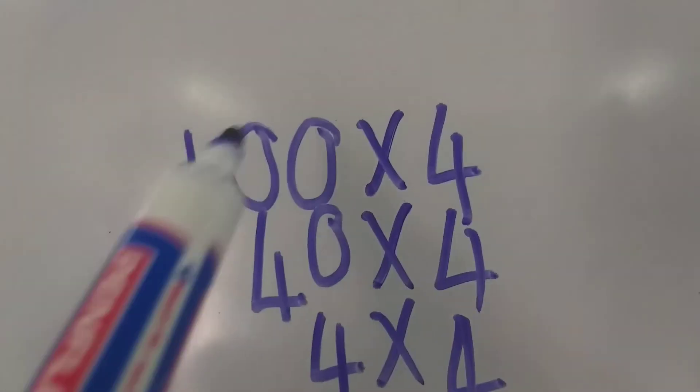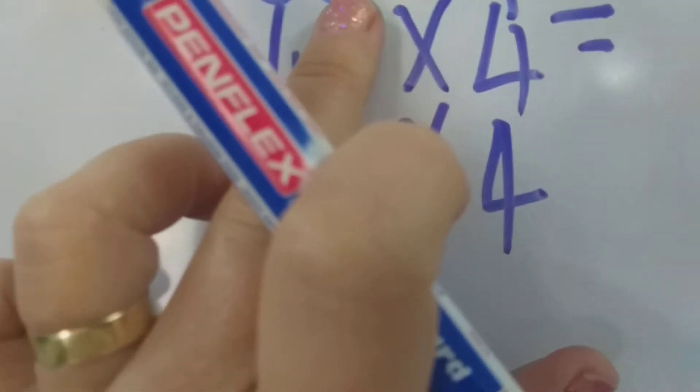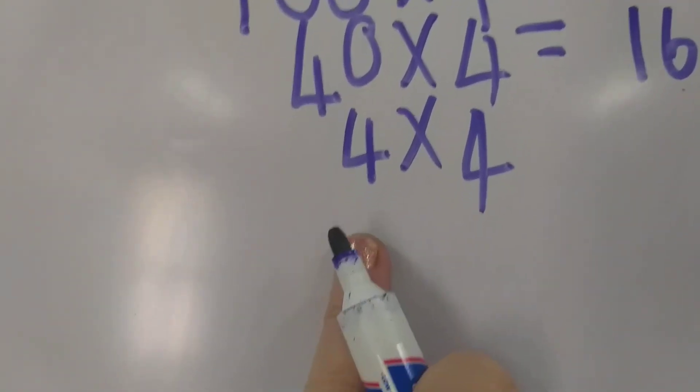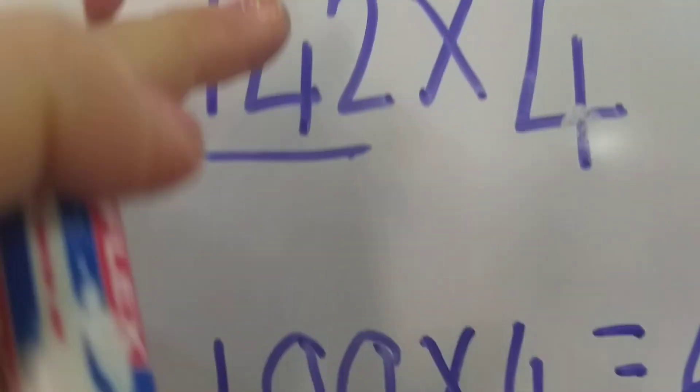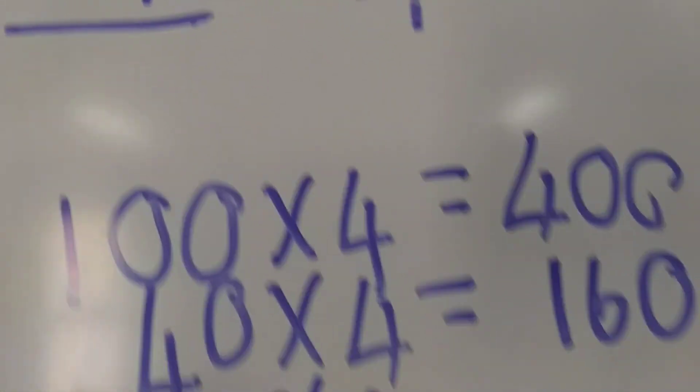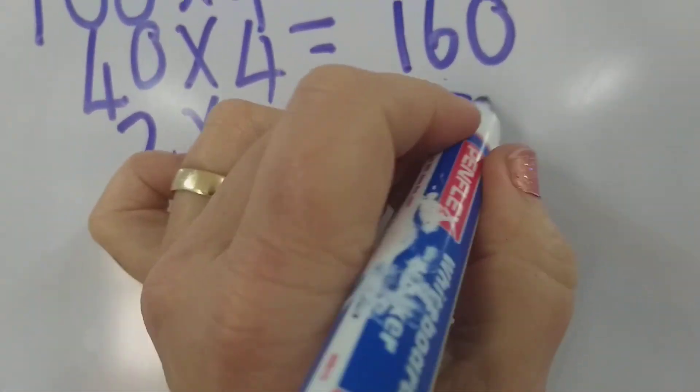100 times 4 is 400. 40 times 4. Okay, about that 0. 4 times 4 is 16. Don't forget to add on that 0. And then, oh, sorry, I made a mistake here. It's 142. So that's 2 times 4. So then 2 times 4 is 8.